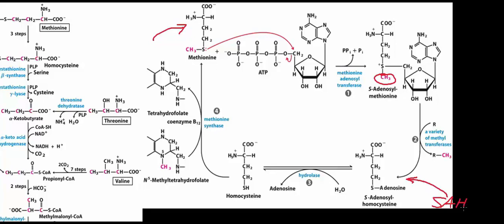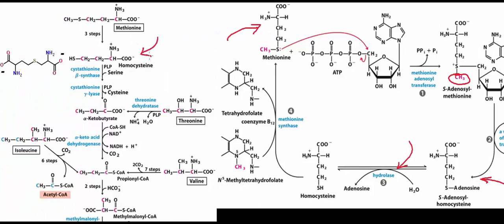The first truly degradative enzyme is S-adenosyl homocysteine hydrolase. This enzyme hydrolyzes off the adenosine in a bimolecular substitution reaction, and you get homocysteine. Homocysteine then reacts with an enzyme called cystathionine beta synthase. When we get to biosynthesis, there is also a cystathionine gamma synthase — be sure to distinguish between the two. Cystathionine beta synthase uses serine in a pyridoxal phosphate-dependent reaction and synthesizes cystathionine.